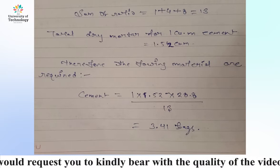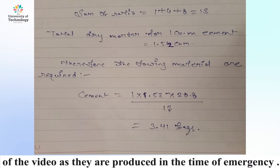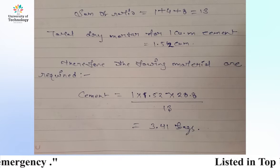So the calculation is: 1 (cement ratio) multiplied by 1.52, divided by 13 (total ratio sum). This gives us 3.41 bags of cement required.